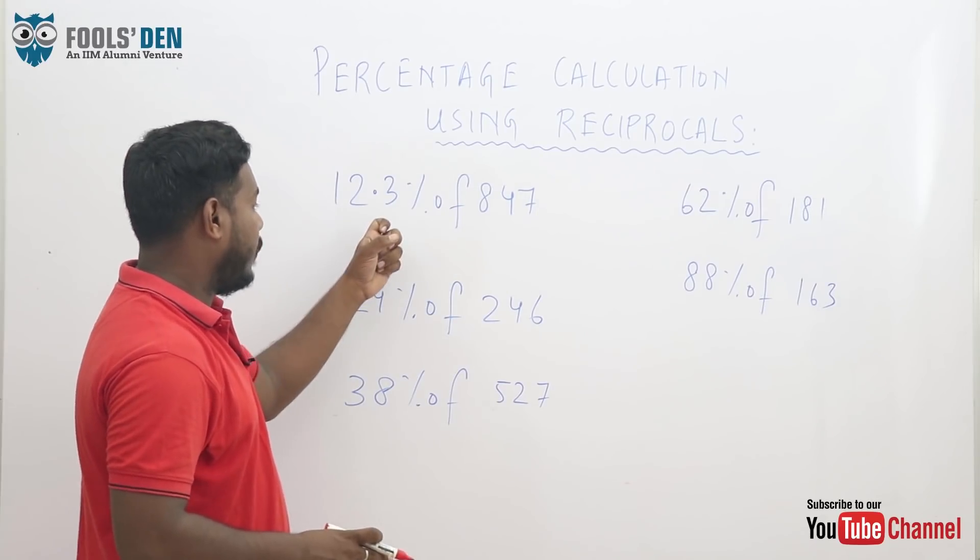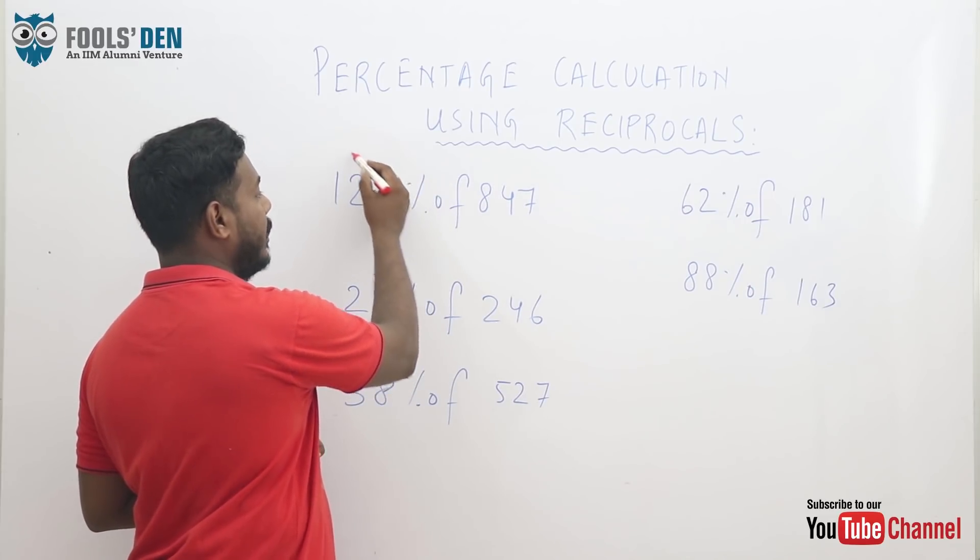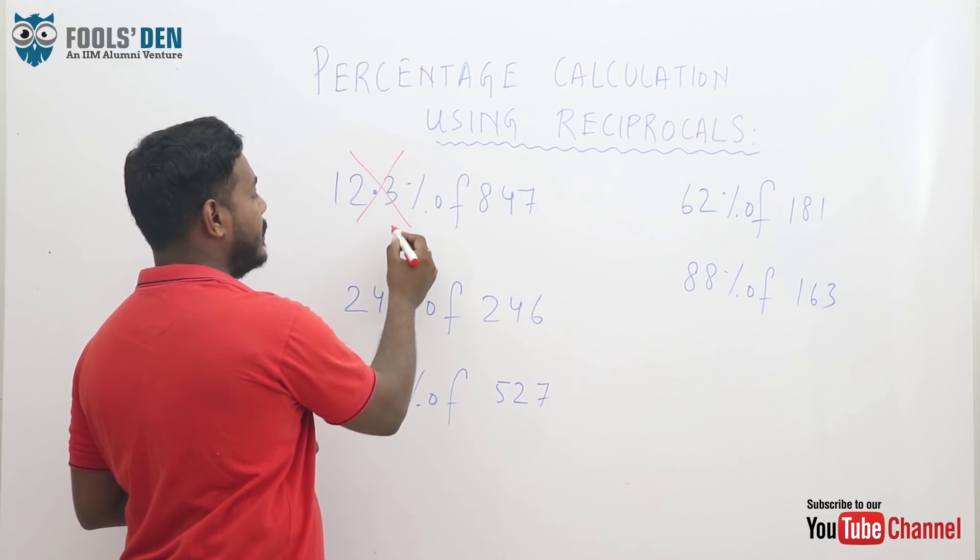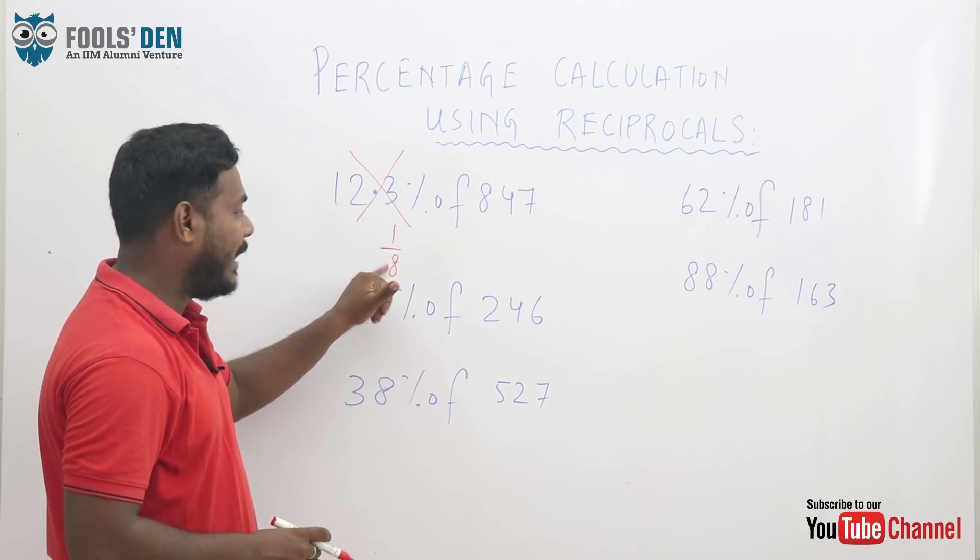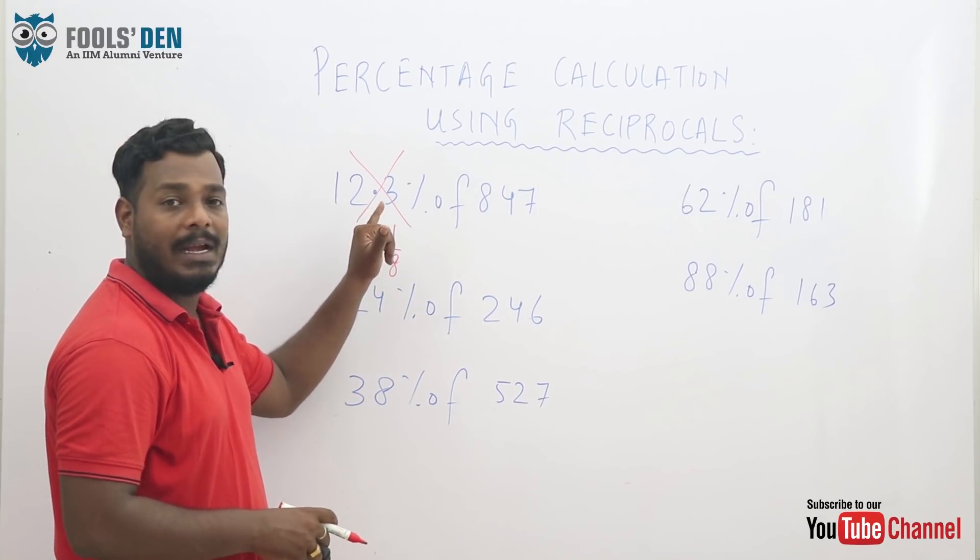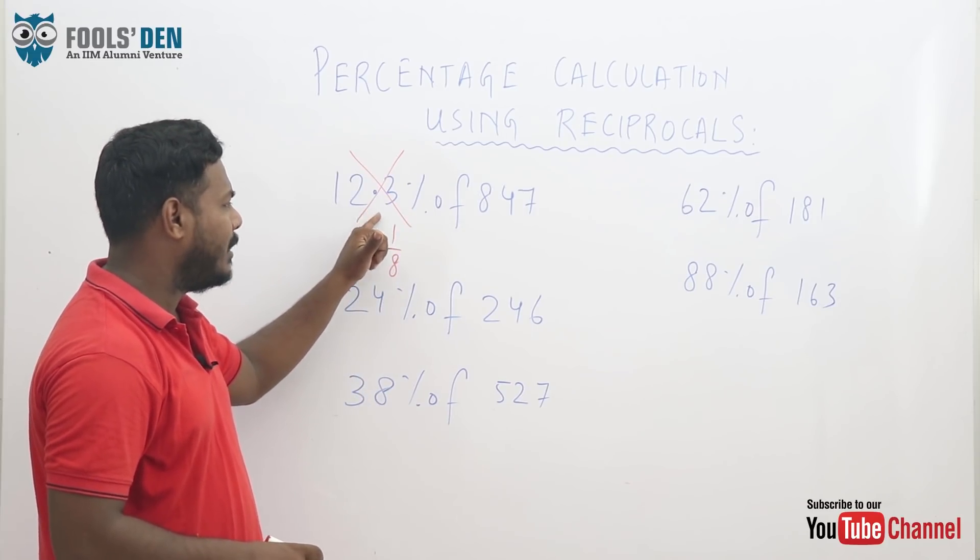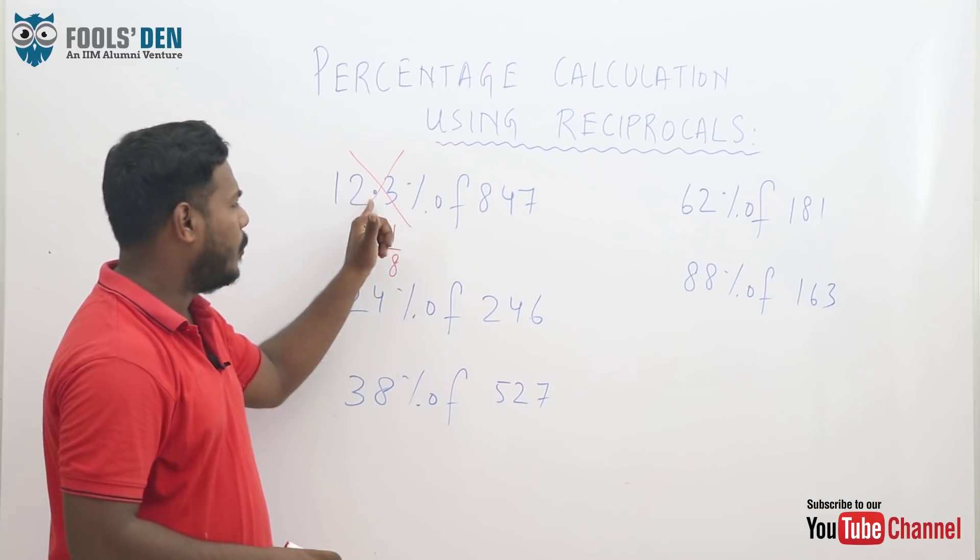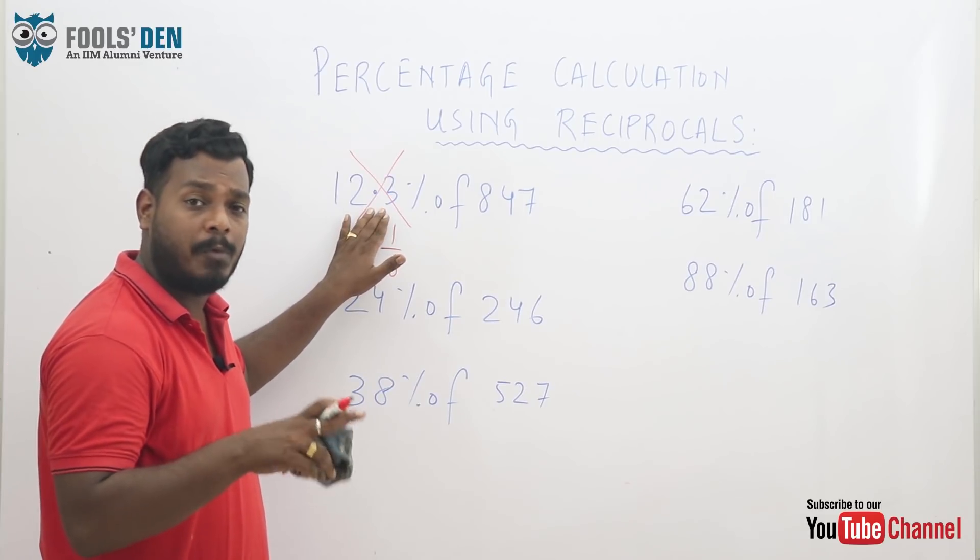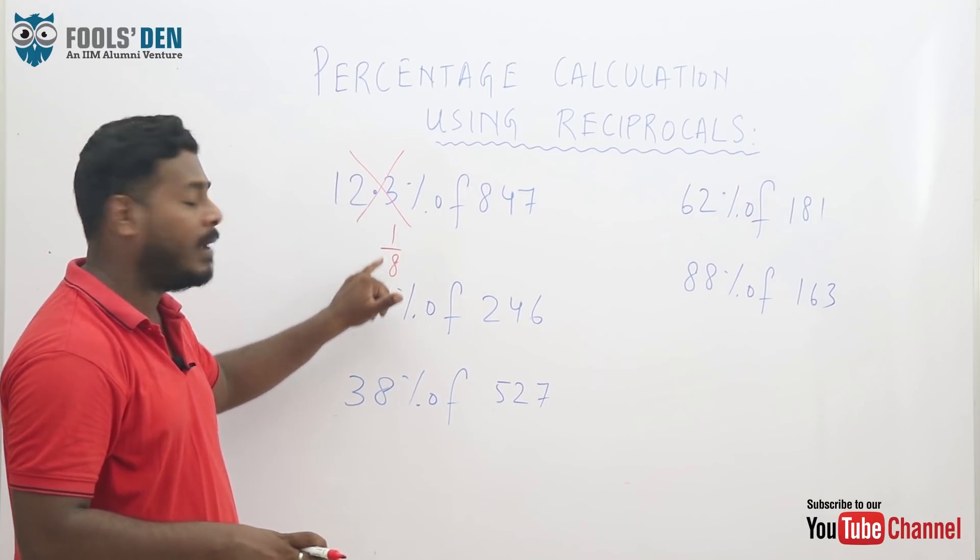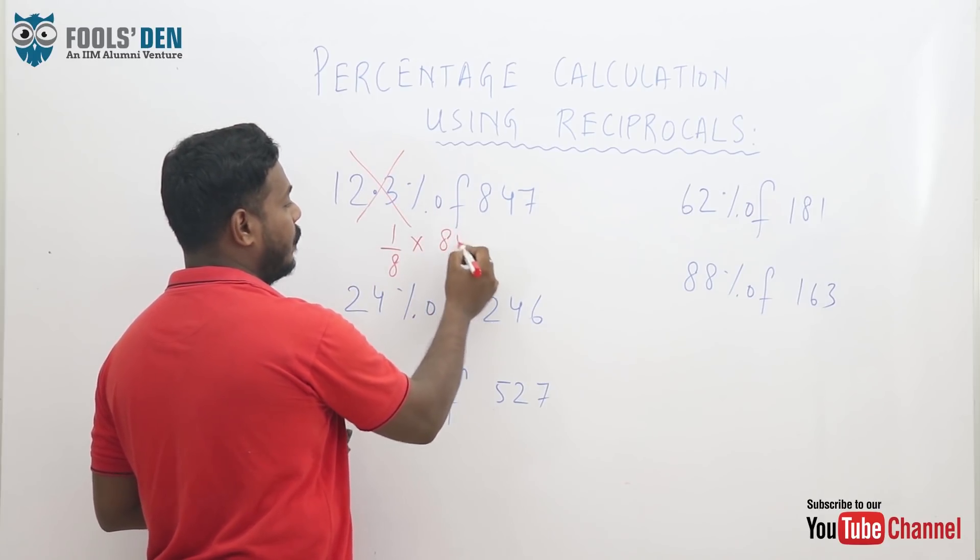So see, if I need to calculate 12.3% of 847, you have to remember that in reciprocals, 12.3% is nothing but 1 by 8. 1 by 8 is the reciprocal. If I write 1 by 8 in percentage form, it is approximately 12.5%, and it can be approximated to 12.3. So instead of calculating 12.3%, I'll calculate 12.5%, which is nothing but 1 by 8. So we've converted this percentage into a fraction.